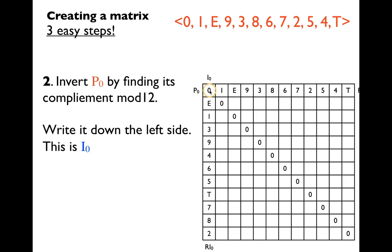The second step is to invert prime P0 by finding its complement mod 12. So we can start with zero. Zero mod 12 is zero. The second member of prime is one. Its complement is 11 mod 12. The next number is E. Its complement is one. Nine complements to three, three complements to nine, eight complements to four, and so on. You fill in your vertical alignment accordingly. Seven to five, two to T, five to seven, four to eight, ten to two. That's the second step.